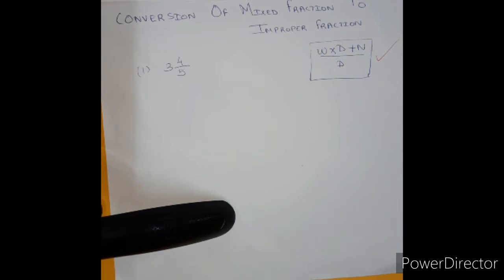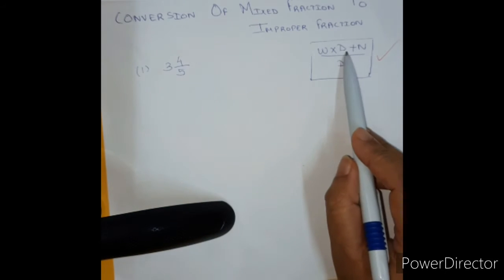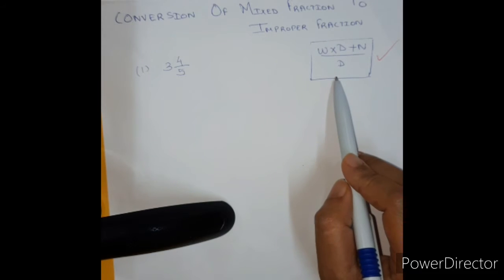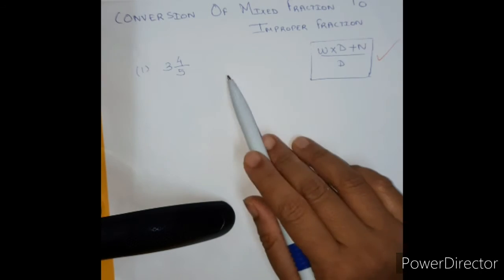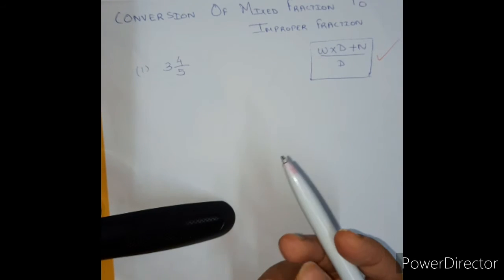So what we are going to do is, W means the whole number, D means the denominator and N means the numerator. Again there is a D which is the denominator, same. Now let's identify which is the W, which is the D and which is the N.